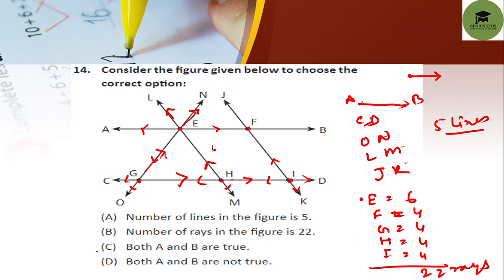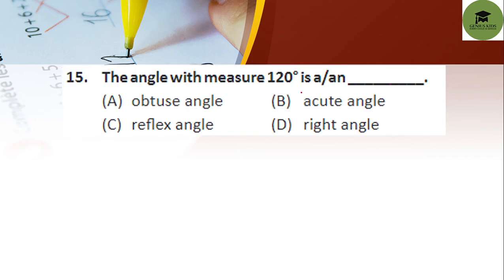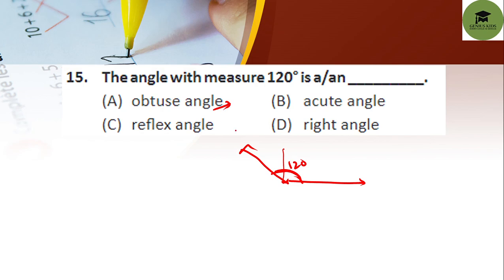Next question: the angle which measures 120 degrees — is it an obtuse angle, acute angle, reflex angle, or right angle? A 120-degree angle looks like this. An obtuse angle is greater than 90 degrees but less than 180 degrees. Since 120 degrees fits this condition, 120 is an obtuse angle. So option A is your correct answer.